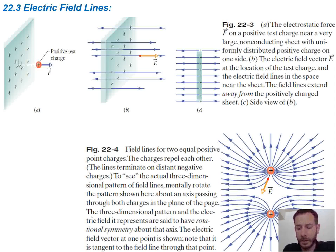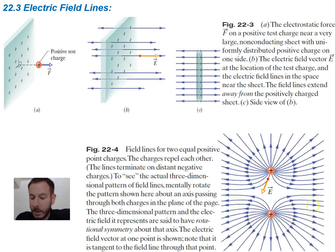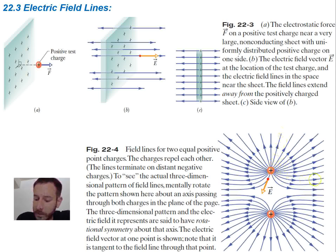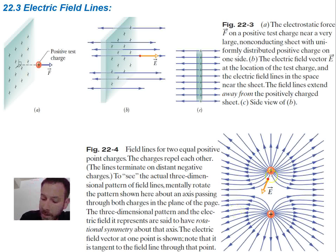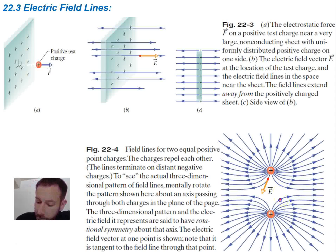Now we're talking about point charges. It depends on the charge of the point charge which direction the field lines go. Looking over here, we have two positive charges, so we would expect the lines to go away — they start at the charge and move outwards. Since the two positive charges repel each other, the lines aren't going to intersect; they get pushed away from each other, giving this curved pattern. The direction of the field at any point on a curve is just the tangent line in that direction.